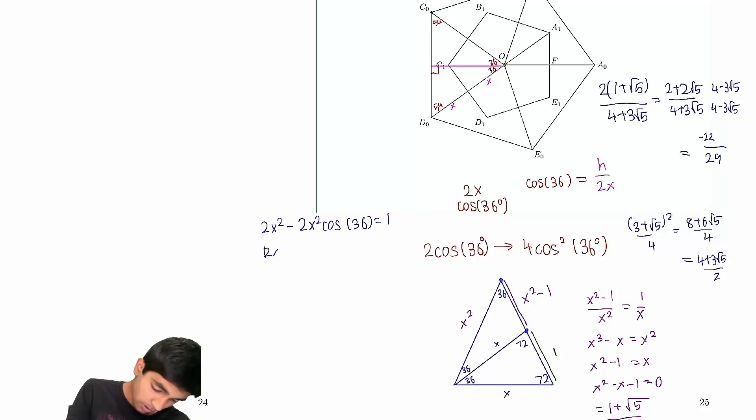And then we factor out 2x squared. We can get 1 minus cosine 36 is 1 over 2x squared. And now, well, we know the value of x is here. So x squared is just, well, 1 plus √5 squared is just, well,